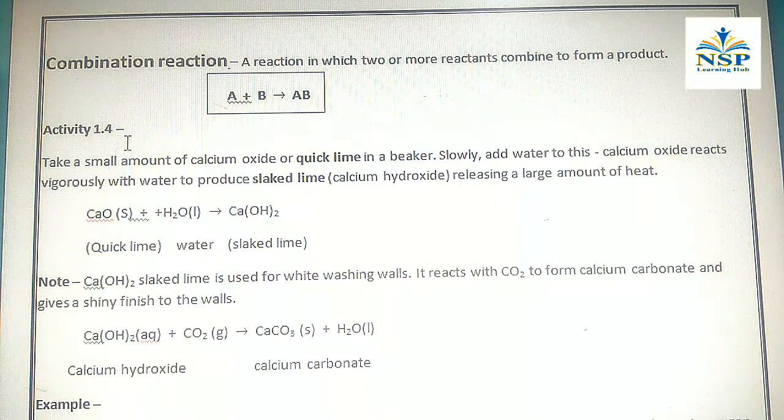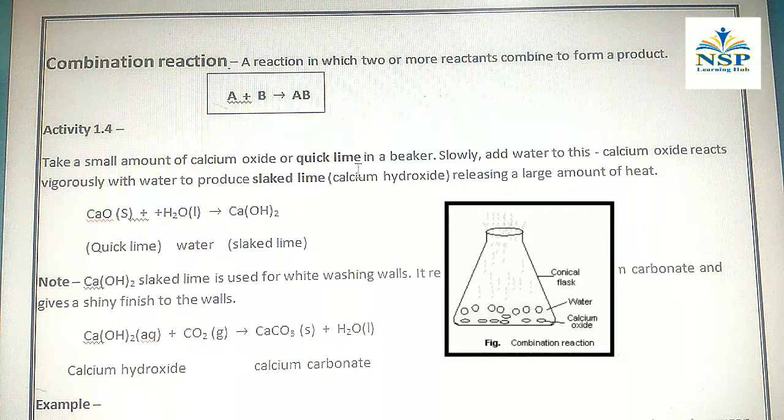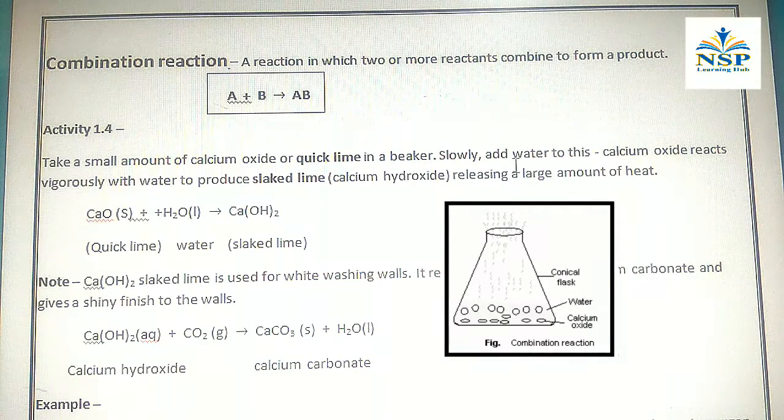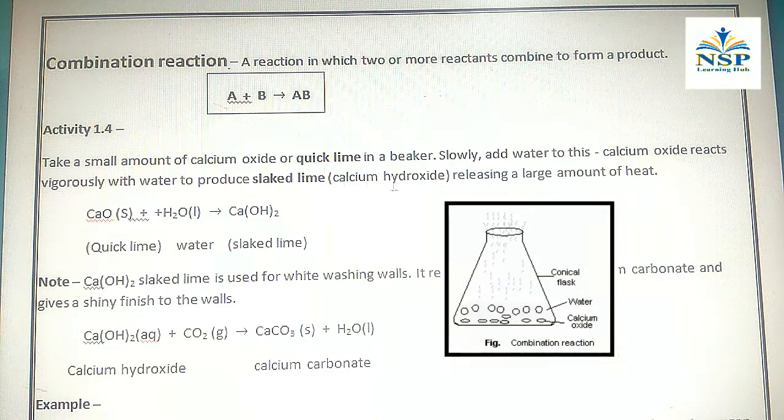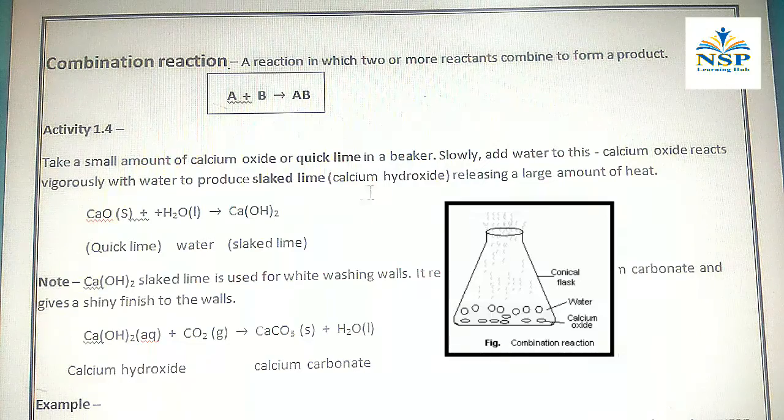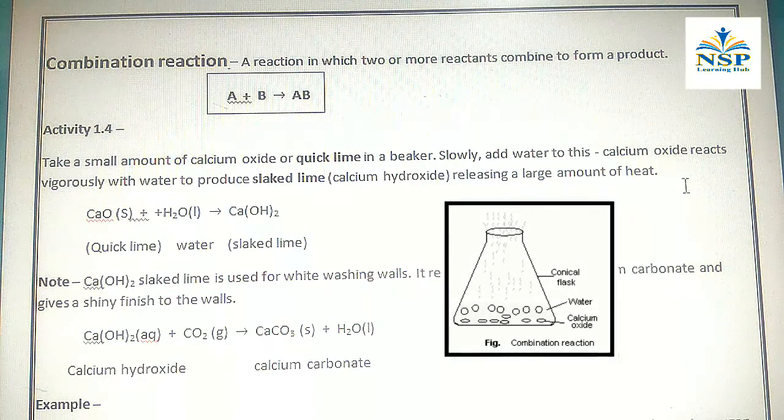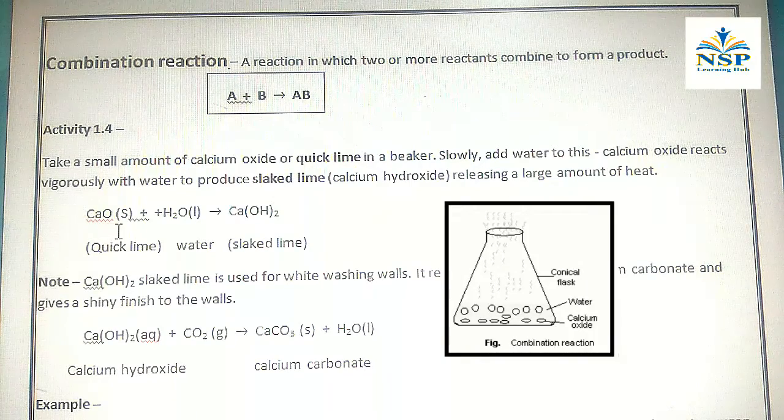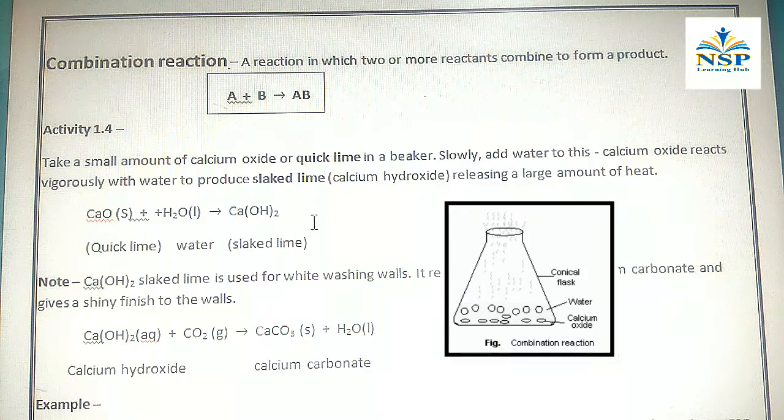Activity 1.4: Take a small amount of calcium oxide or quick lime in a beaker. Slowly add water to this. Calcium oxide reacts vigorously with water to produce slaked lime, calcium hydroxide, releasing a large amount of heat. CaO plus H2O gives Ca(OH)2.